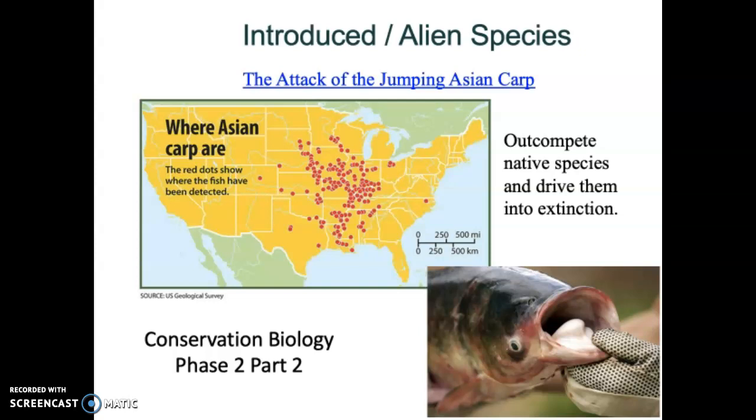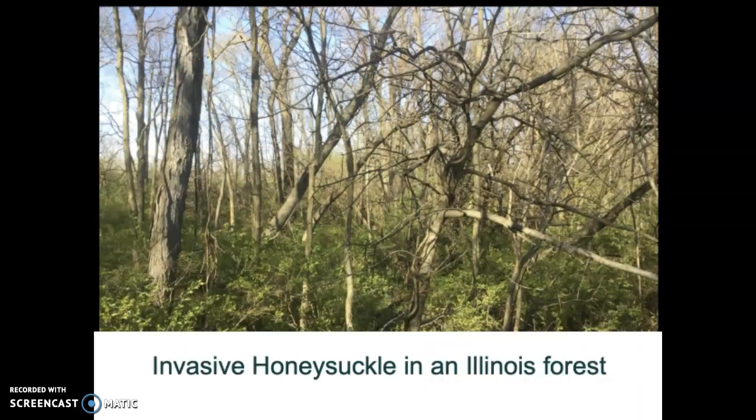In the plant world, let's take a look at honeysuckle. This is a great picture of an Illinois forest in early spring — the trees haven't leafed out yet, but notice all that greenery towards the ground. That's all honeysuckle. Honeysuckle was brought here intentionally to help control erosion. This plant grows super fast, it spreads like crazy. We put it on hillsides to control soil erosion — fantastic idea.